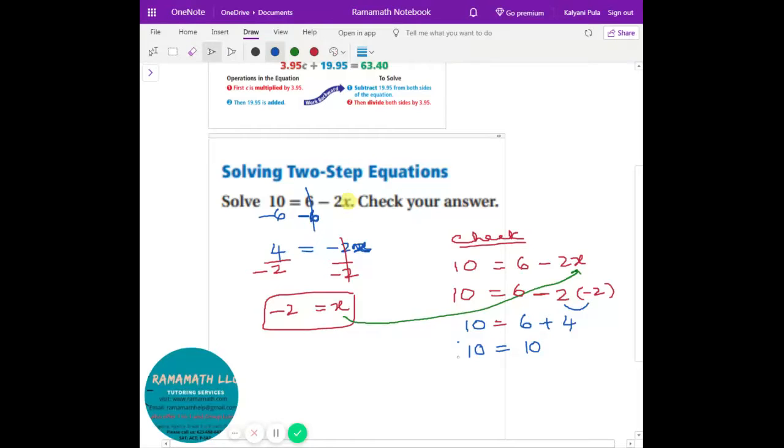And then I go to 10 here. I add 4, 6 plus 4. That is 10. And also here I have 10. So both 10s are equal. That means it's good to go. Whatever the answer we got, we did it correctly. So that is called the solution. Checking solution.